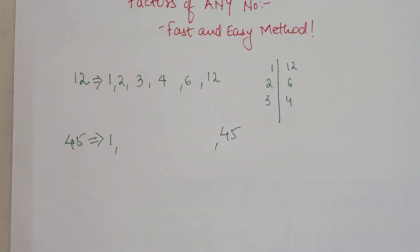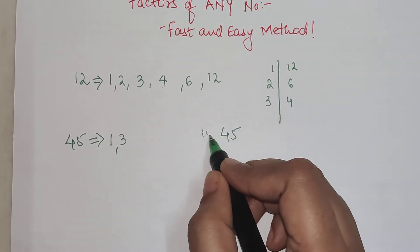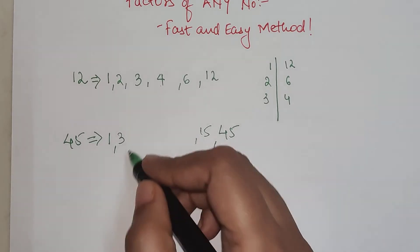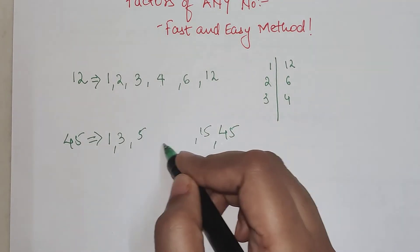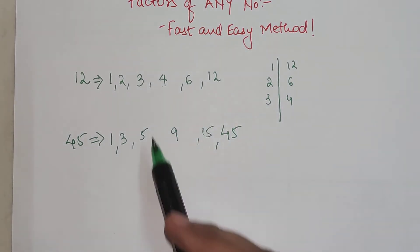With this method you will know where to stop. Here we know that 3 and 15 will get you 45. 3 into 15 gets you 45. Then we have 5 into 9. These are the factors.